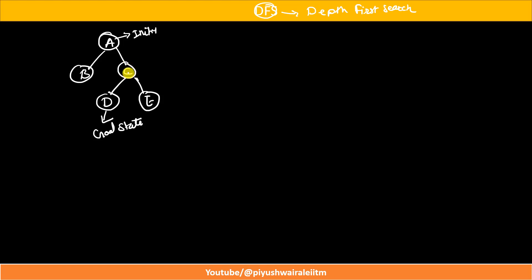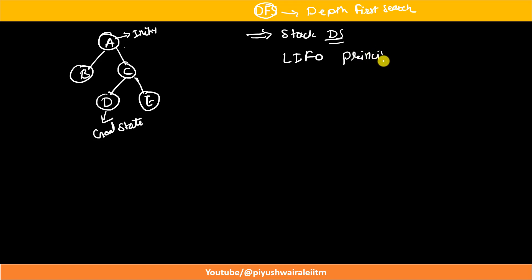In Depth First Search, what happens? This algorithm works on a stack data structure — basically a Last In First Out principle. In the case of DFS, we try to explore one node and go in a particular depth. We explore a node in a vertical way, that is depth-wise.